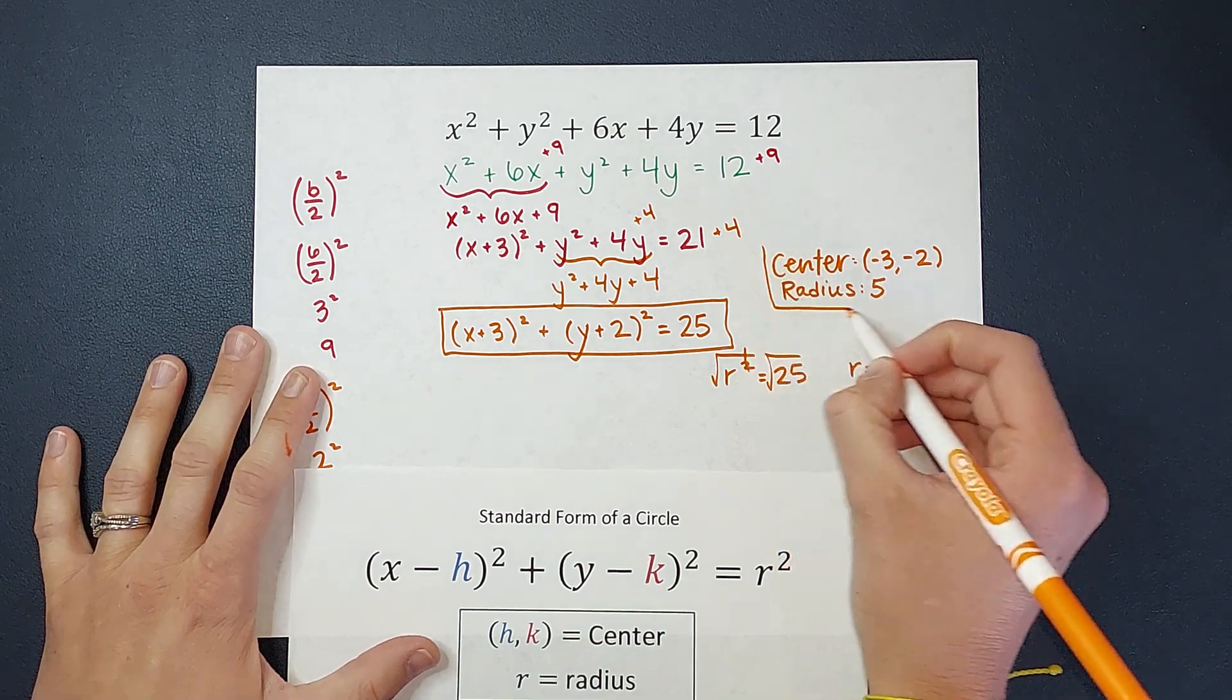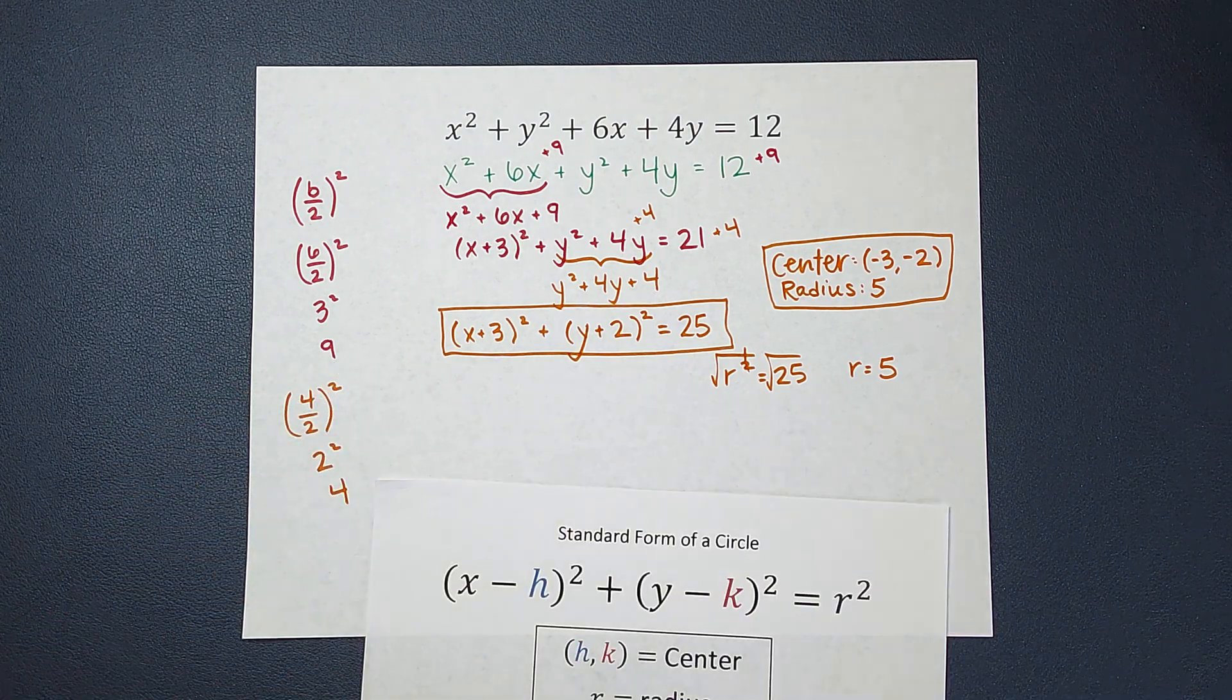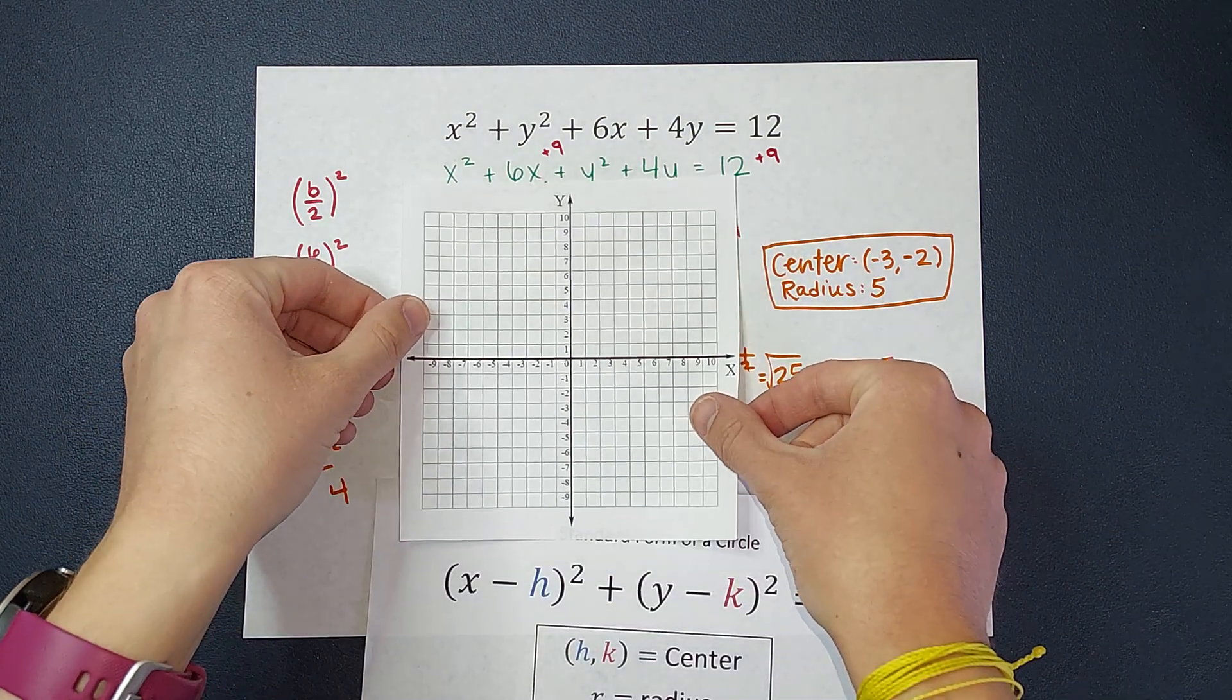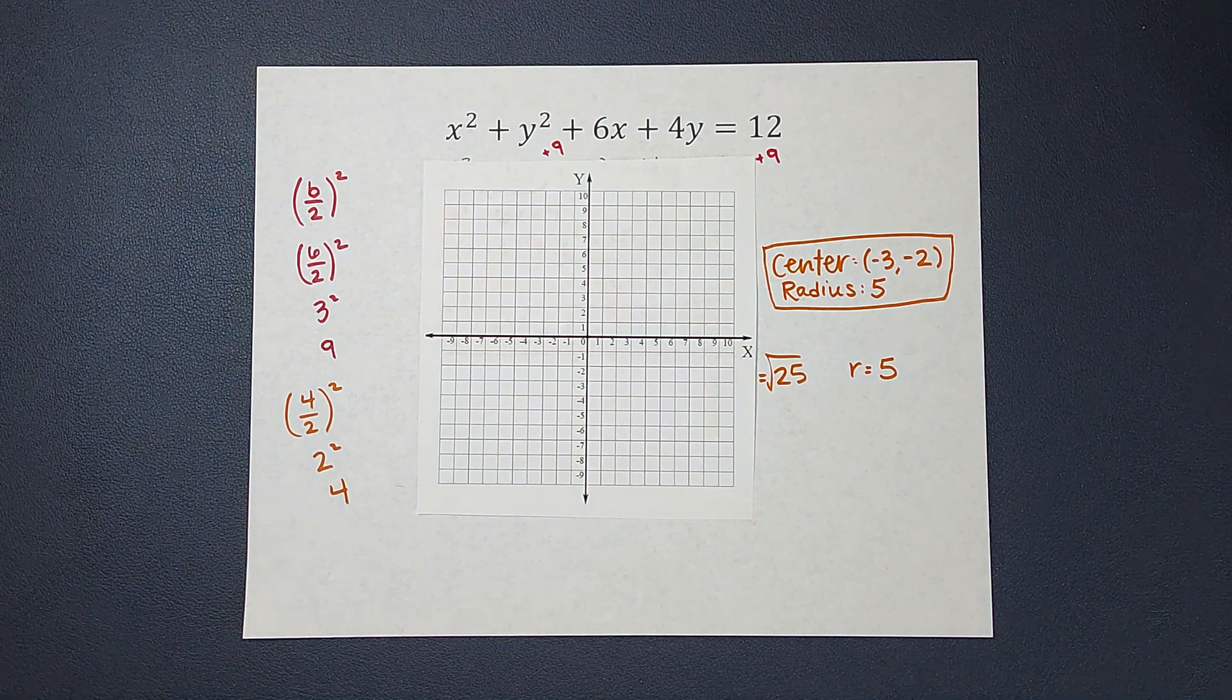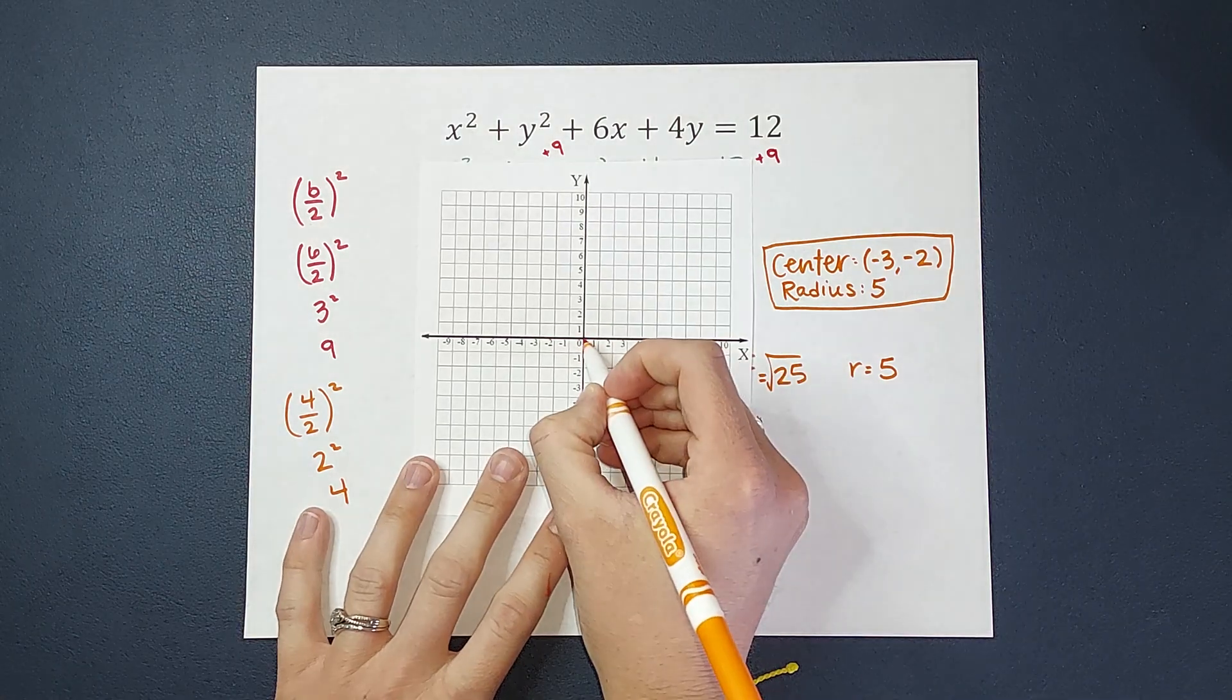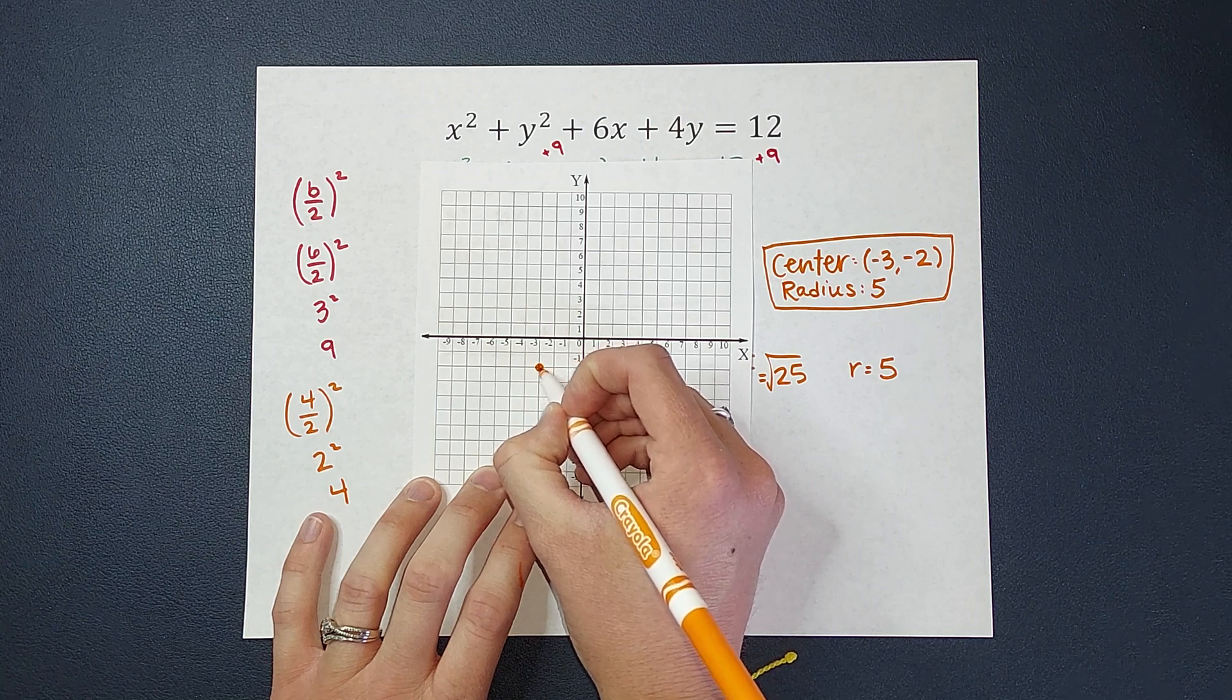Now that I have, finally, my center and radius, I can graph this. So here is my coordinate plane. Let's make this a little less busy here. Here is my coordinate plane. My center is negative 3, negative 2. So, of course, I start at 0, 0, move over negative 3, and down 2. That is the center of my circle.